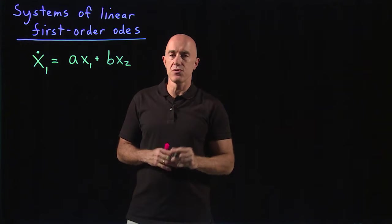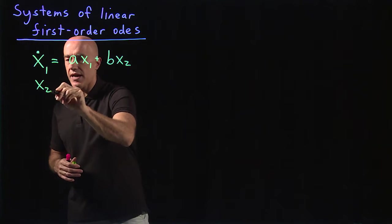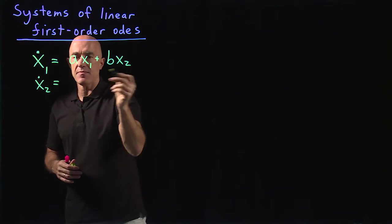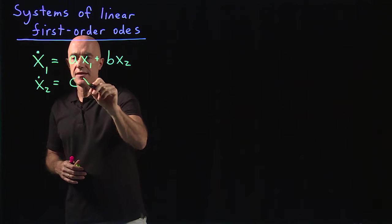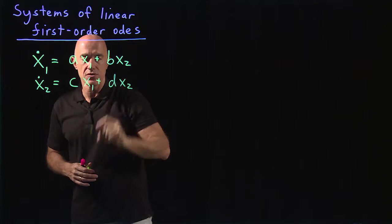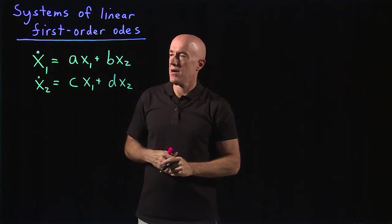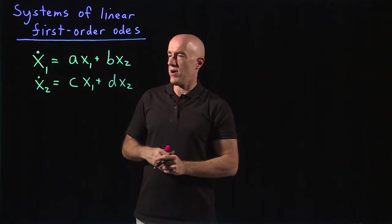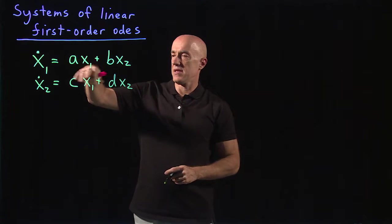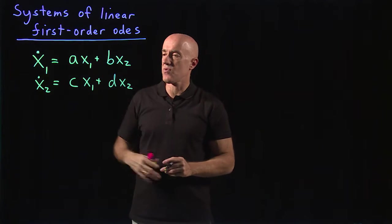If we do two equations, the second one will be x2 dot, and then some other coefficient, c times x1 plus d times x2. These are two coupled first-order equations. The independent variable is t. The dependent variables are x1 and x2.